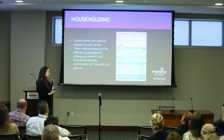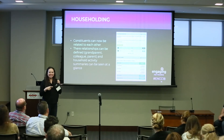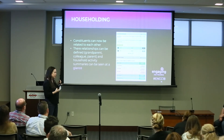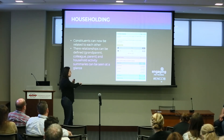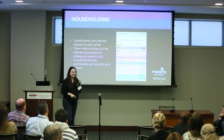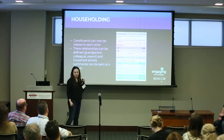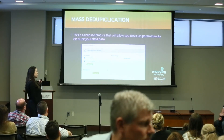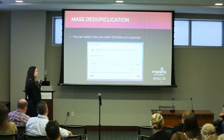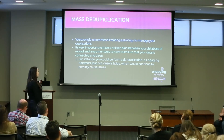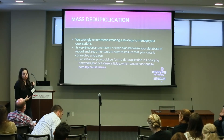Householding — this is what Chris was alluding to, and it's really exciting. You can now relate constituents to each other in Engaging Networks. We're exploring this and seeing how we can use it when cleaning up data and relating the CRM. You can define relationships — grandparent and all kinds of different tags — and get an immediate dropdown summary of all their activities. Mass deduplication is a licensed feature that's pretty exciting. As Chris was saying, a holistic strategy to manage duplications is really important, and this can be a great tool in your toolbox.